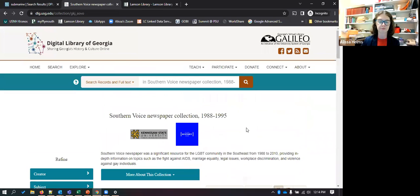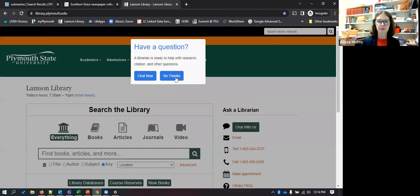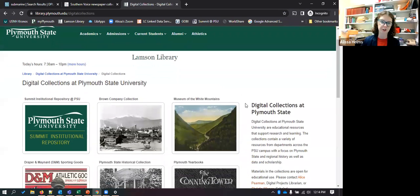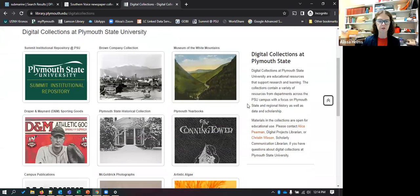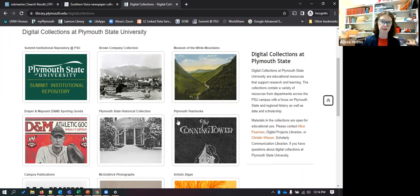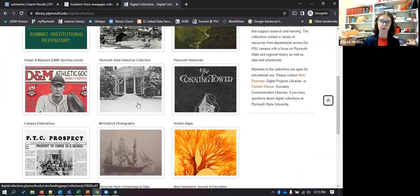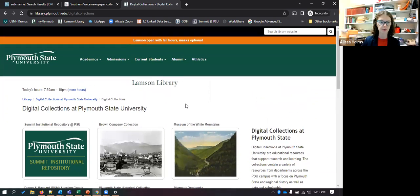So I'll do one more, let me see if I can actually get to it. There we go. Just to put a plug in for our digital collections - at the bottom of the library page you can click on digital collections. Here are all of ours here at Lamson. We've got the Brown Company, the Museum of the White Mountains, some Plymouth State related things, our campus publications, yearbooks, and the historical photo collection. So just to point out a couple things of those. And that is all that I have.